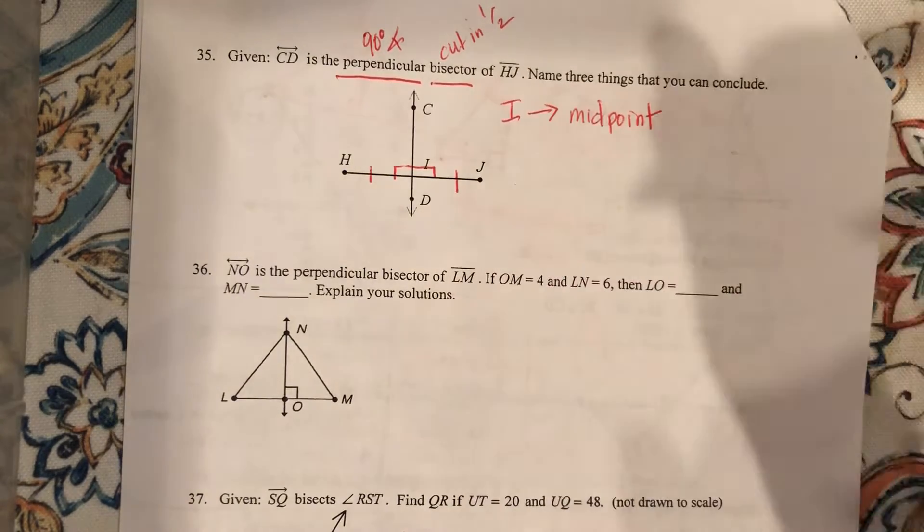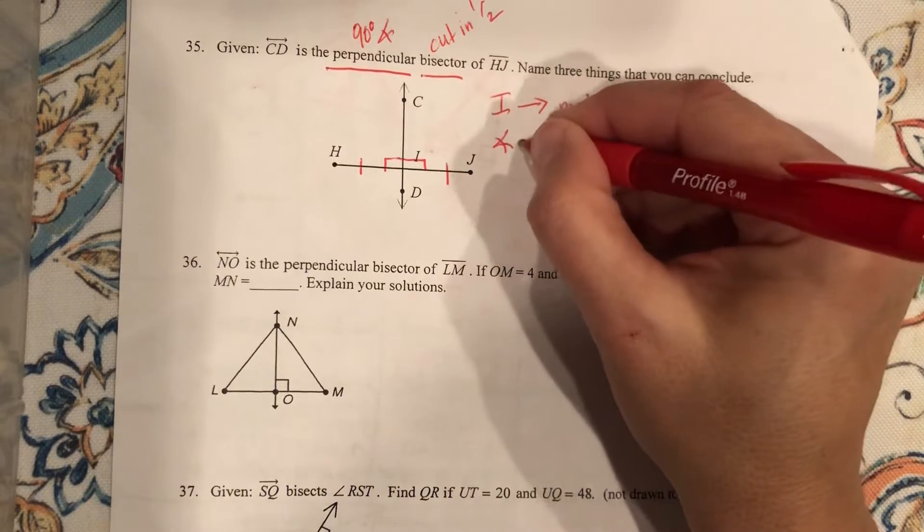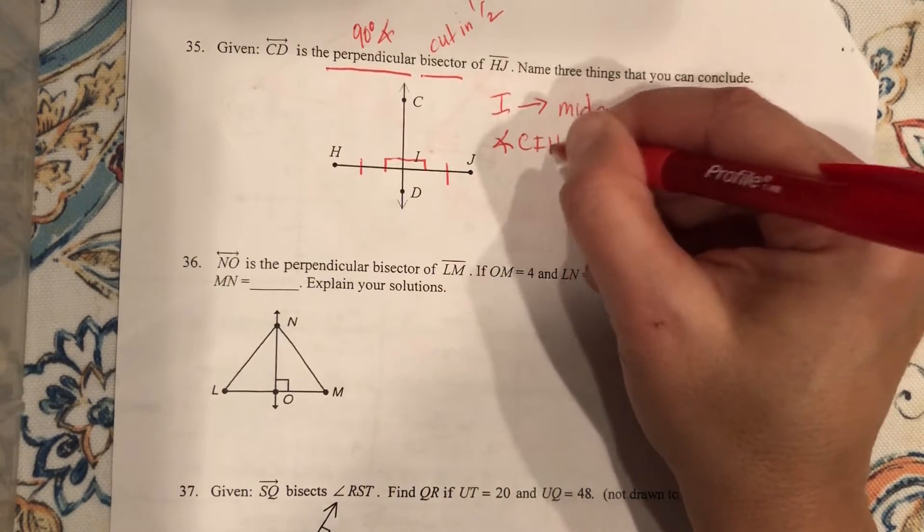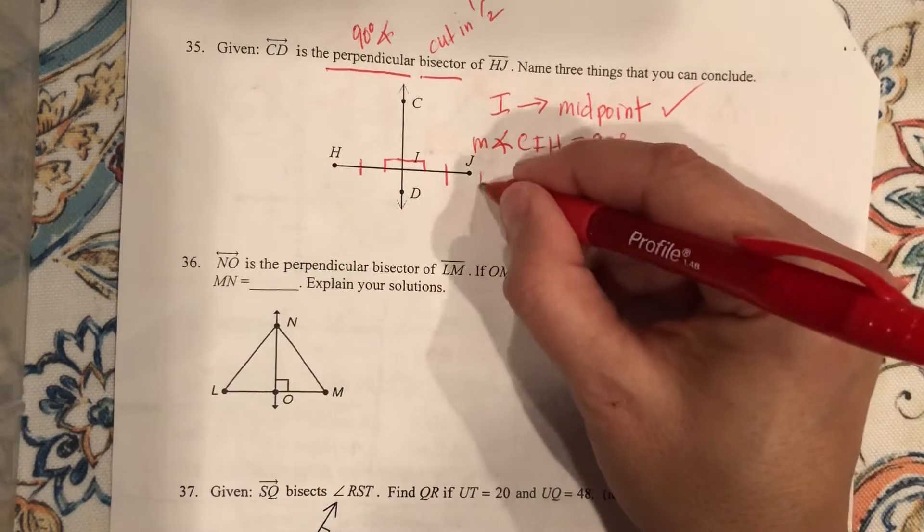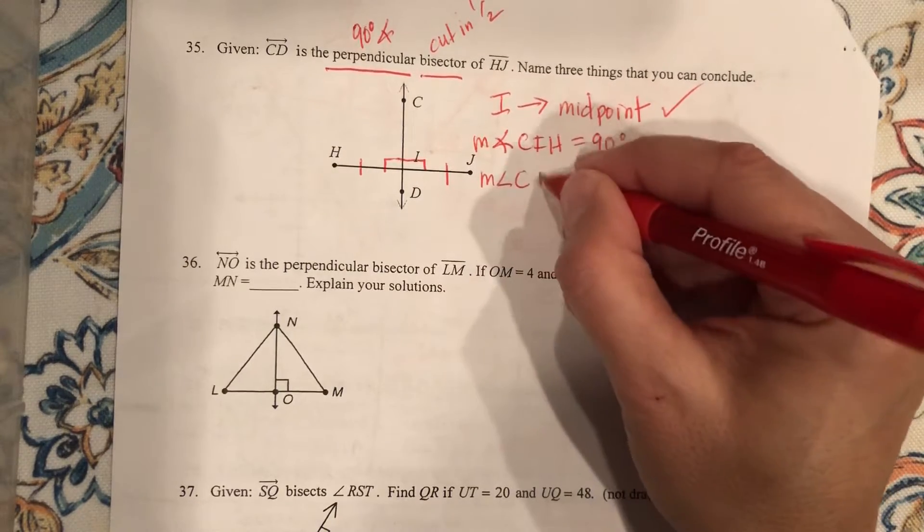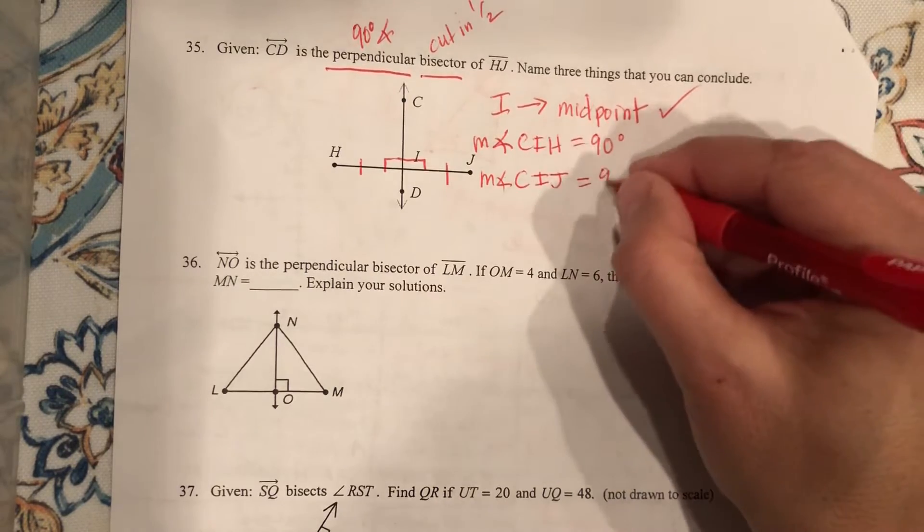Name three things you can conclude. Well, number one, I is the midpoint. Number two, angle CIH equals 90 degrees, the measure of it. It's a right angle. And the measure of CIJ is also 90 degrees.